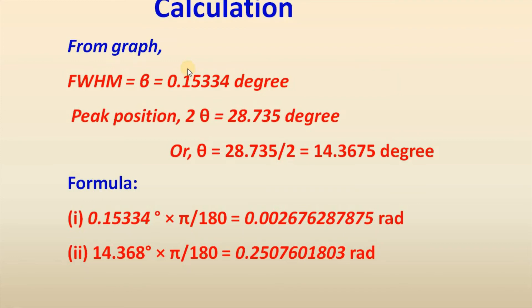Therefore, from graph, full width at half maxima which was equal to beta was 0.15334 degree for our sample and peak position twice theta was 28.735 degree or theta equal to 14.3675 degree. Now, in Scherrer equation, you need to convert the value of beta and theta in radians. In order to do that, you need to follow this formula.